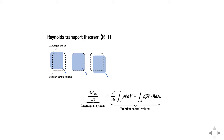The Reynolds transport theorem is illustrated by the following equation: on the left is the Lagrangian system, on the right is the Eulerian control volume. We have dB_sys/dt, where B_sys is some extensive property like total mass, total momentum, or total energy. That rate of change equals the rate of change of B inside the fixed control volume, plus the rate at which B exits that control volume. Little beta is big B per unit mass, so rho times beta is B per unit volume.